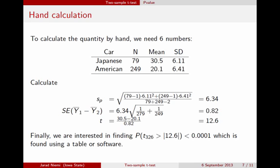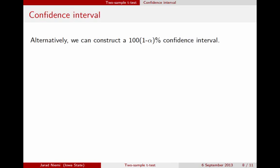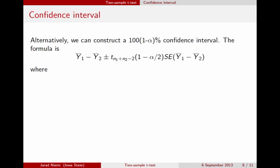Alternatively, we could look at the estimation question and ask: what is the difference between Japanese and American cars in terms of miles per gallon? We quantify our uncertainty using a confidence interval. The generic formula for constructing a 100 times (1 minus alpha) confidence interval uses alpha, typically taken to be 0.05. The formula uses the difference in sample averages, the standard error of that difference, and a t-cutoff quantity — t subscript df — which is the critical value, looked up in a table or via statistical software.